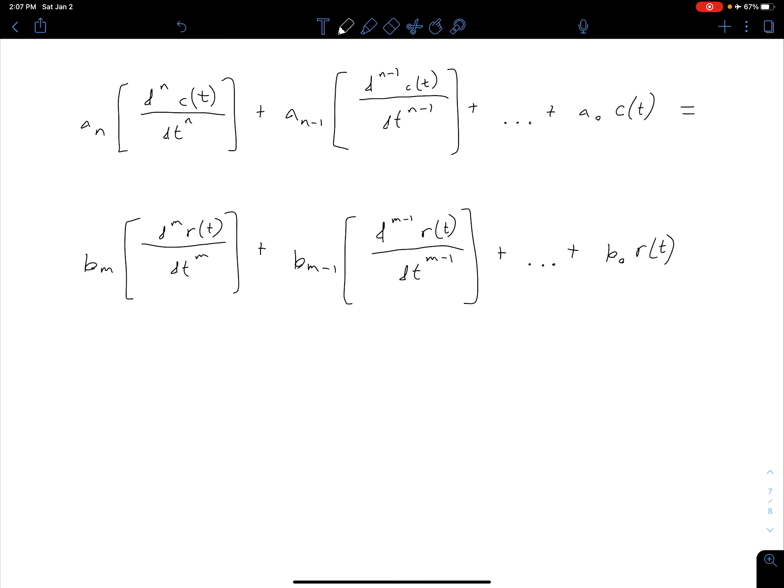Remember our a sub n, a sub n minus 1, all the way to a naught, and then same thing with our b sub m, all the way to b naught, are just numbers. Those are our coefficients. So from our linearity property, those just come along for the ride.